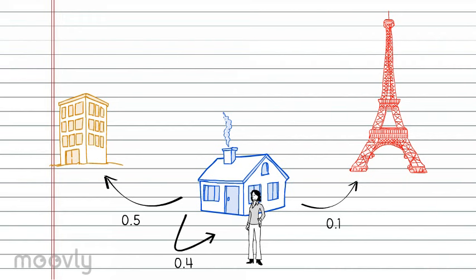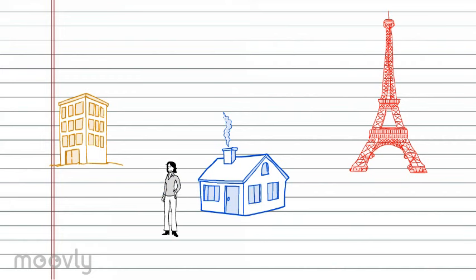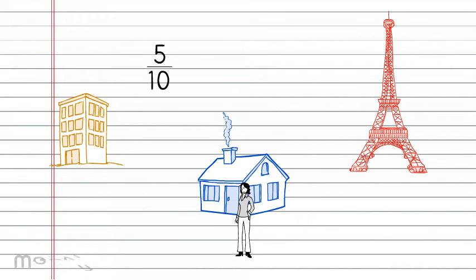How do we choose these numbers? Well, typically, we have to watch a process and count how many times a transition takes place. In our case, we have to watch Romy as she moves around. Let's say that we see Romy leave home 10 times, and she goes to work 5 out of those 10 times. This gives us a probability of 0.5 that if Romy is at home, she will go to work next.